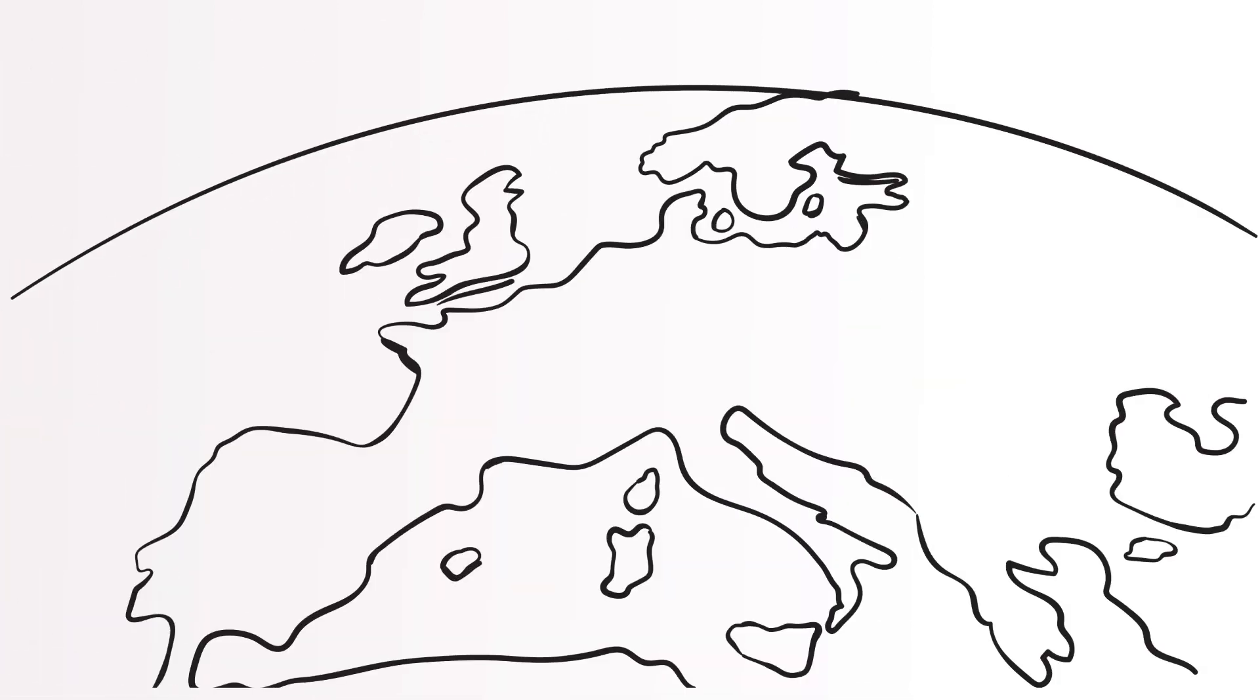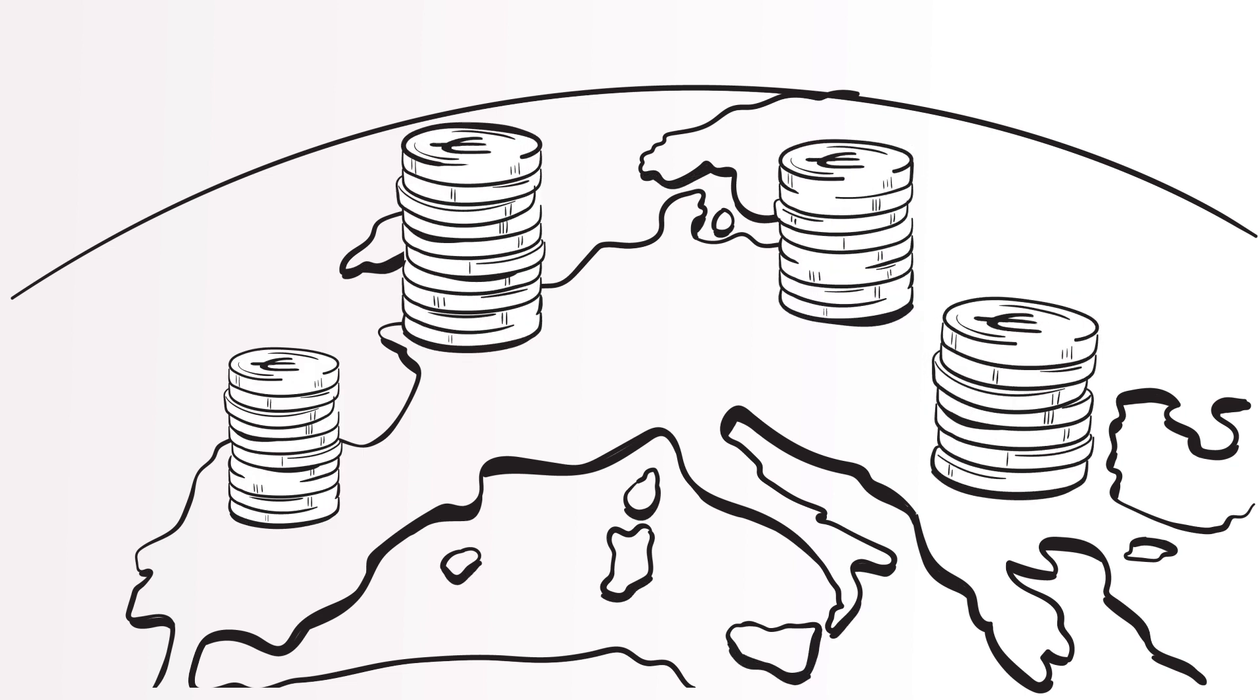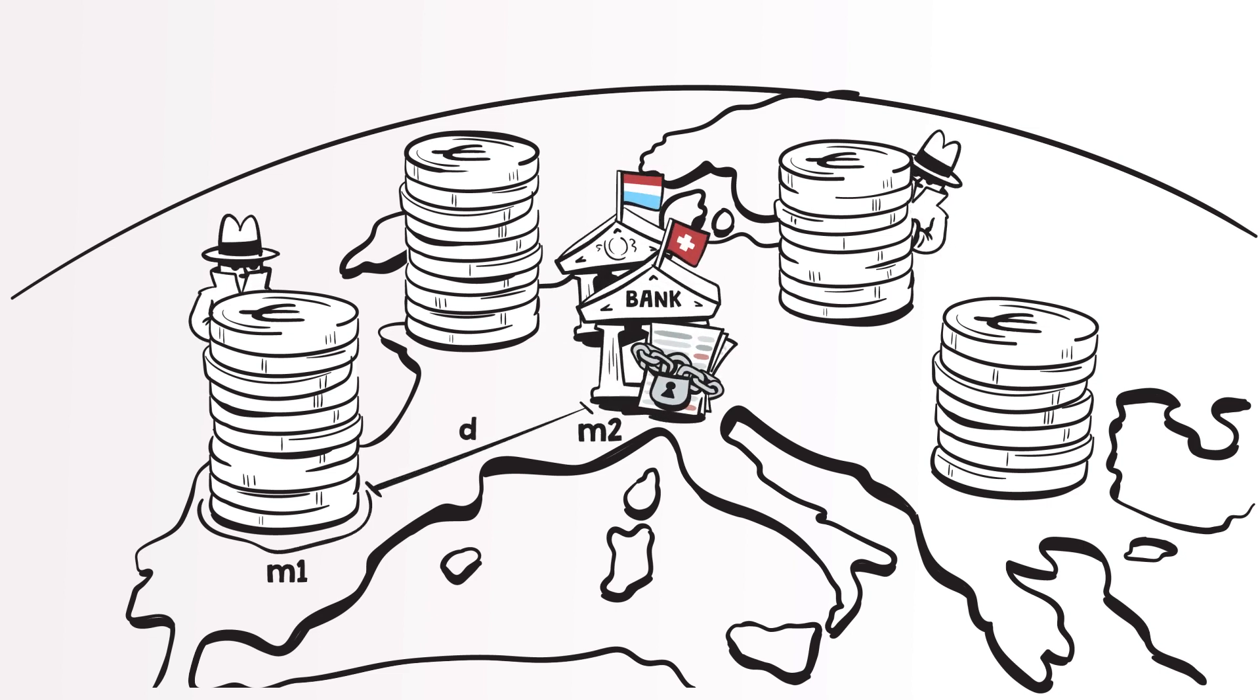Our gravity model for money laundering starts with an estimation on how much money is made from crime across the world and how much of that money needs to be laundered. We then use the gravity equation with assumptions on what criminals are looking for, like bank secrecy, to estimate where all this money will be laundered.